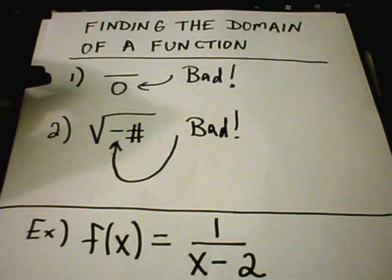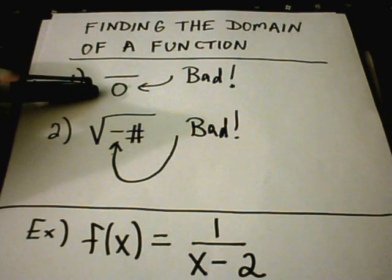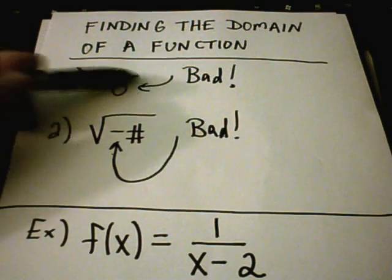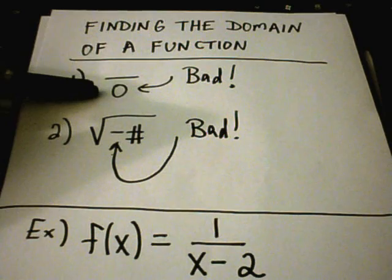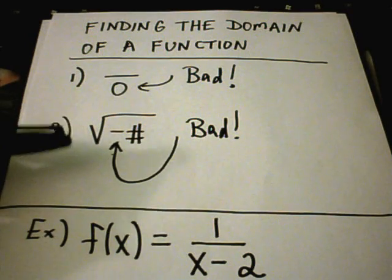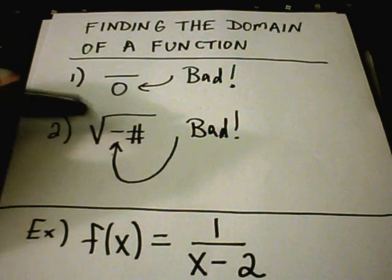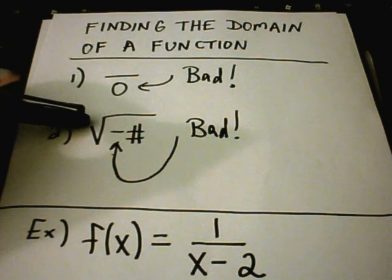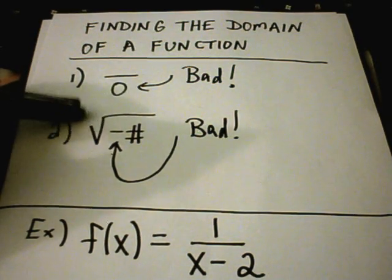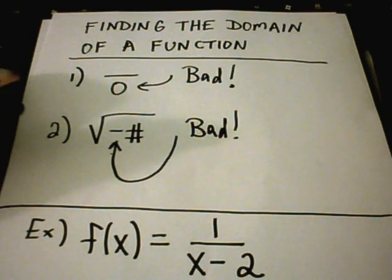There are really only two rules you ever need to worry about. The first one says if you get zero in the bottom of a fraction, that is bad — any value of x that will make that happen you're going to want to leave out of the domain. The other scenario is if you have a negative under a root. You can have negatives under odd-powered roots, but if the root is any even power — two, four, six, eight — you cannot have a negative number underneath it.